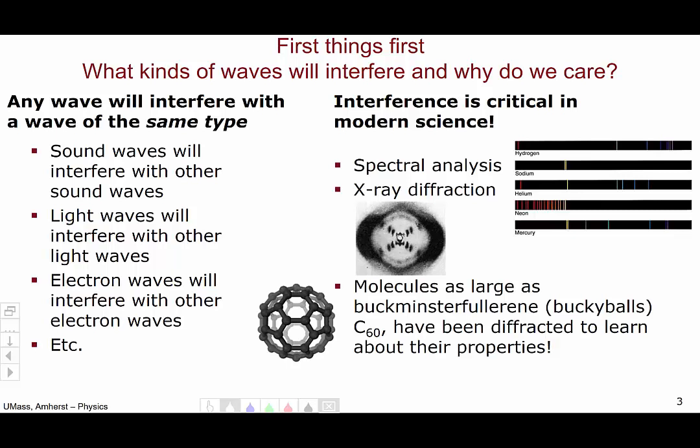Another application of interference is through diffracting molecules themselves. Molecules as large as Buckminster Fullerene, also known as bucky balls with formula C60, so they have this little ball shape of carbon atoms, have been diffracted. And by looking at how these molecules are diffracted and how those waves interfere with each other, we can learn about their properties.